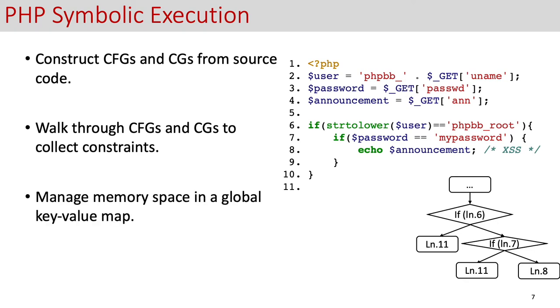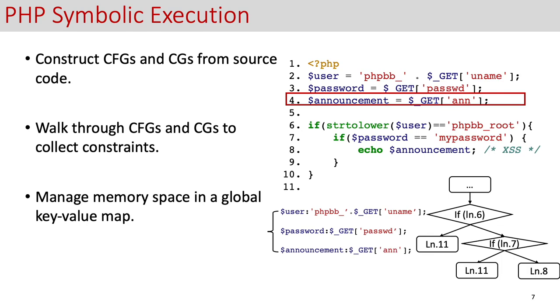We maintain the memory space in a global key value map. In particular, we store and update the memory during the symbolic execution. For example, the execution of the code in lines 2 to 4 can result in the corresponding symbolic or concrete data in the memory.